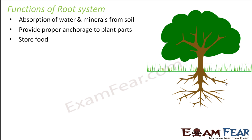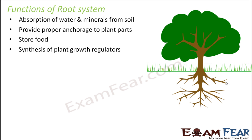Roots also help in storing food. Many plants have roots that get modified into different types of structures for food storage — not every plant's roots look the same as shown in a standard figure; in many cases they get modified into different shapes and forms. Roots also aid in the synthesis of plant growth regulators, since plants need certain enzymes and hormones for their growth, and roots help produce many of these plant hormones.